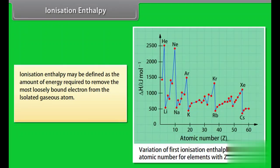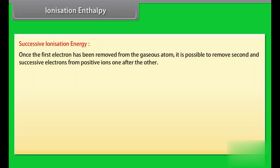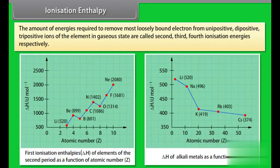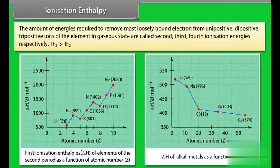Ionization enthalpy: Ionization enthalpy may be defined as the amount of energy required to remove the most loosely bound electron from an isolated gaseous atom. Successive ionization energy: once the first electron has been removed, it is possible to remove second and successive electrons from positive ions one after the other. The amount of energy required to remove electrons from unipositive, dipositive, and tripositive ions are called second, third, and fourth ionization energies respectively. It may be noted that IE₃ > IE₂ > IE₁.